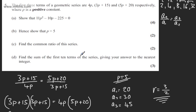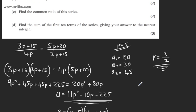In part D we need to find the sum of the first 10 terms of the series, given our answer to the nearest integer. Let's collect some information then. We want a, n, and the ratio, and that's going to give us enough information to do this.